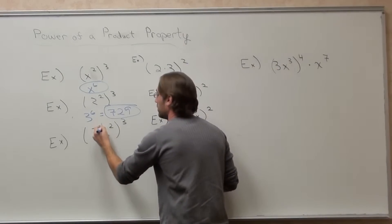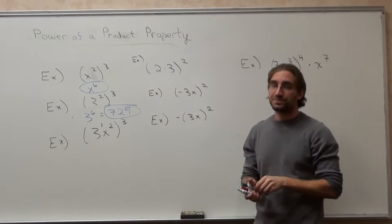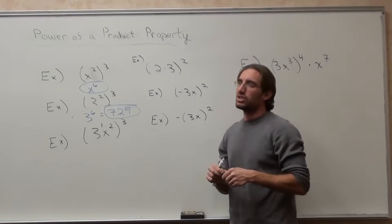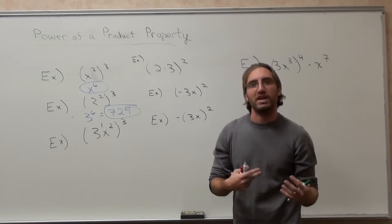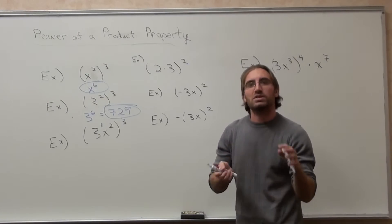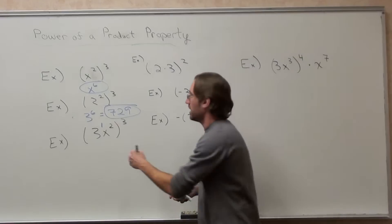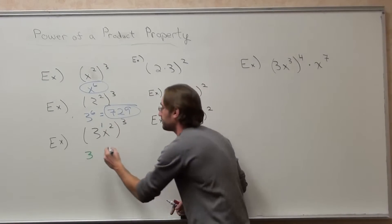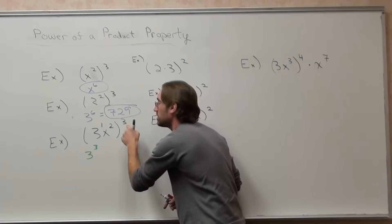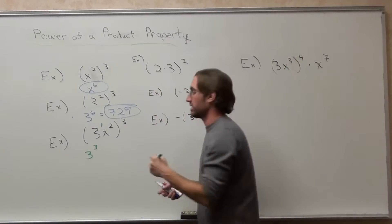You use the same steps to figure out this problem, but you kind of think about it like distributing, but not really. I'll write it out so it makes sense afterwards. It's 3 to the 1 times 3 is 3, and 2 times 3 is 6. So it's 3 to the third x to the sixth.